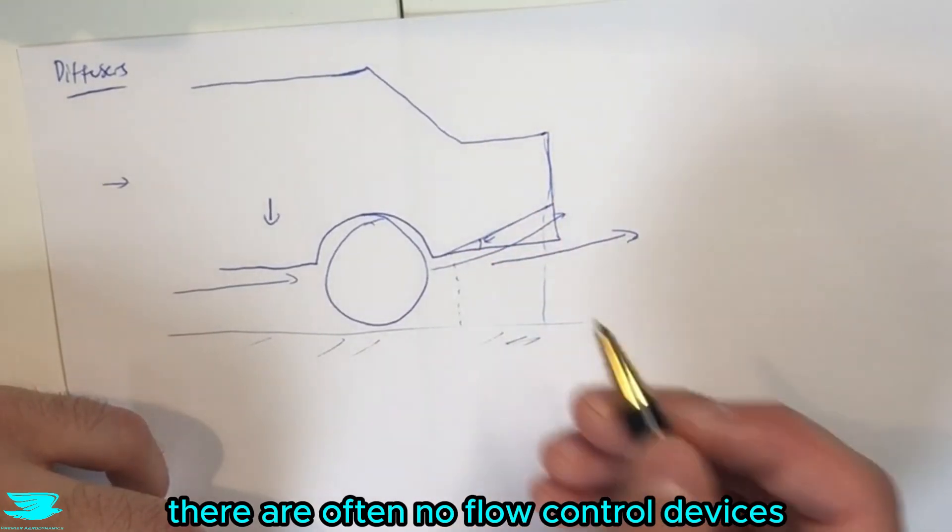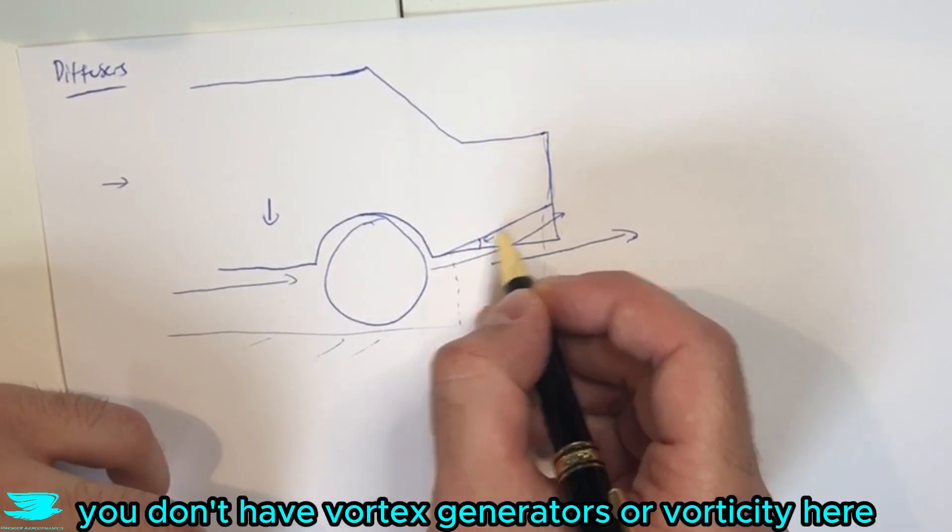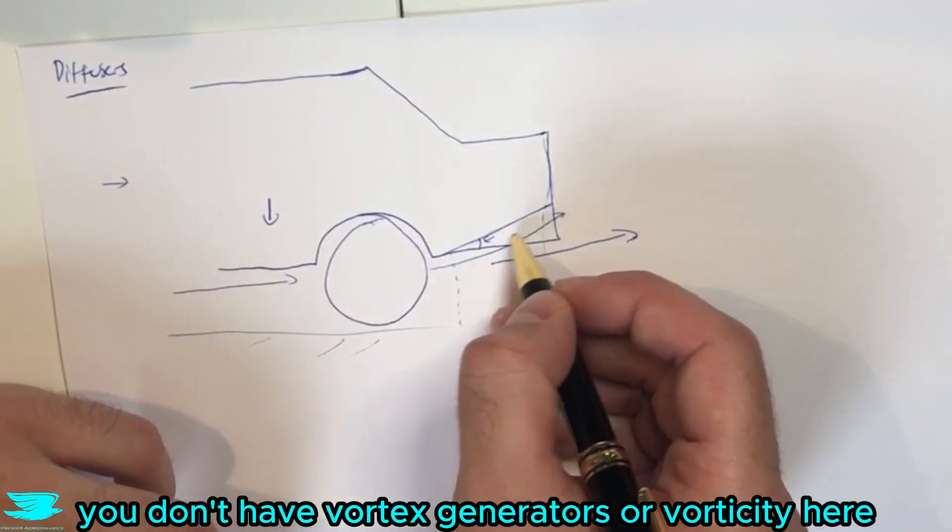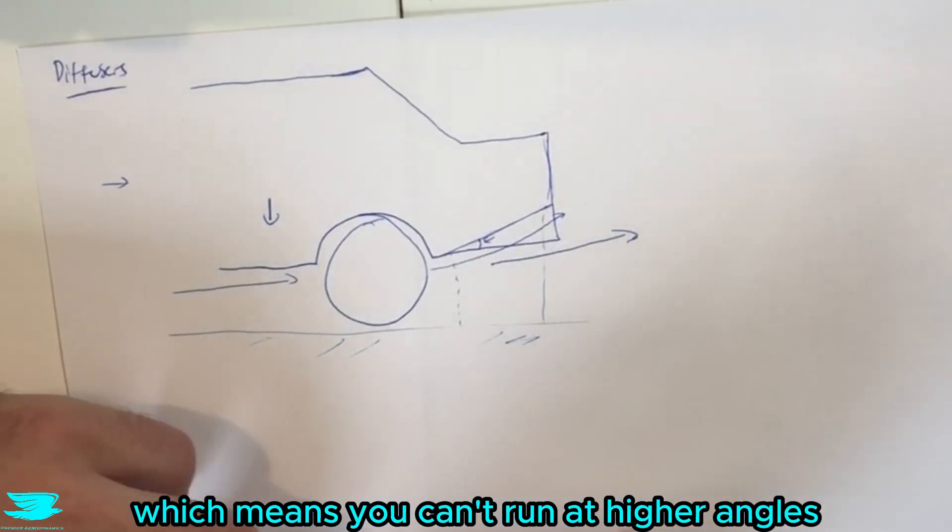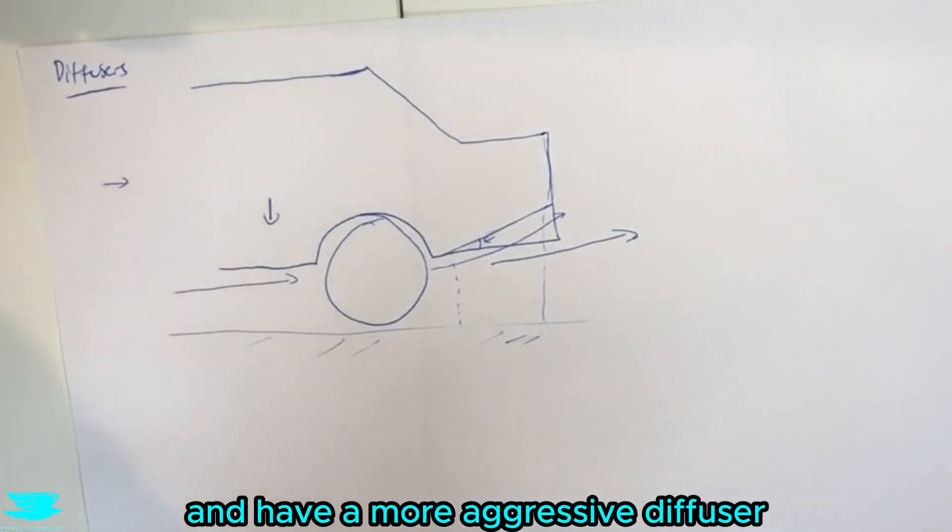Secondly there are often no flow control devices. For example you don't have vortex generators or vorticity here that will help keep the flow attached on the surface, which means you can't run it at higher angles and you can have a more aggressive diffuser.